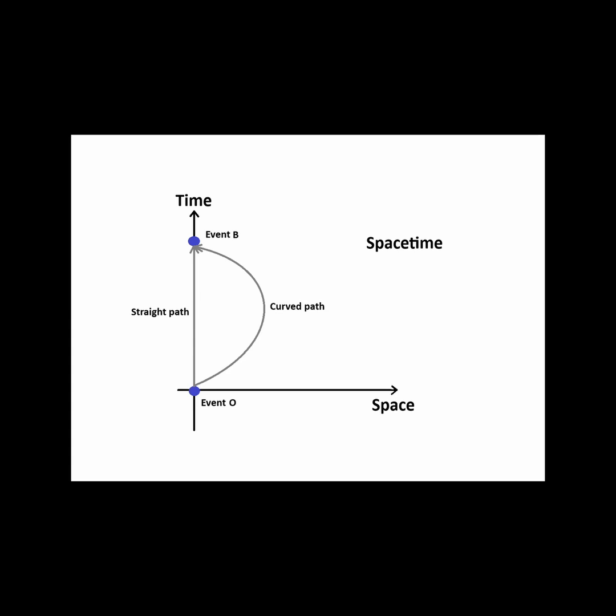But now let's take an alternative path between O and B, a straight path between the events. In this case, the interval calculations of the path don't include a space separation component. It's zero. So the total space-time interval is larger than the curved path.